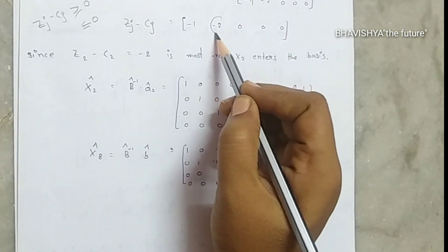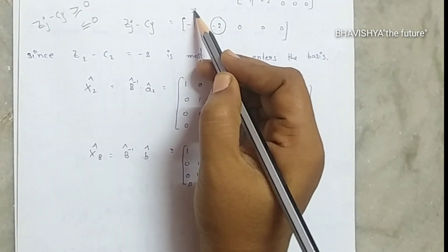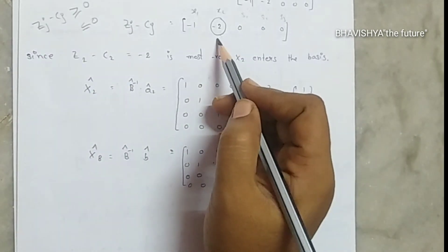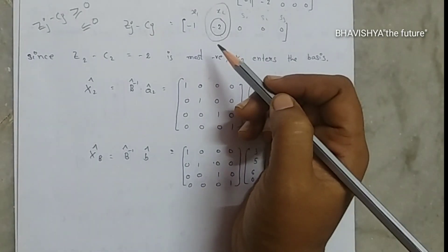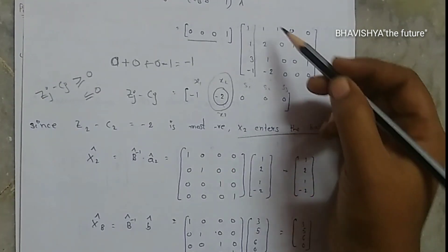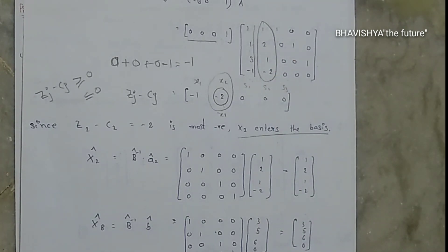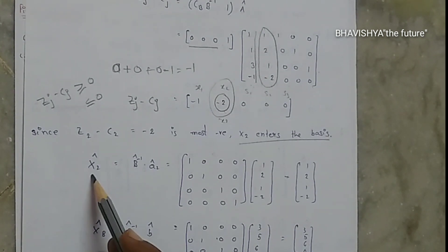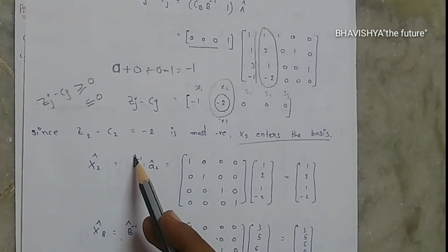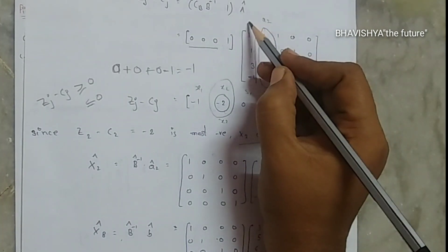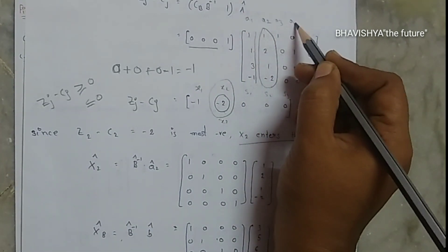The most negative value is -2, corresponding to the x2 column. The variables are x1, x2, s1, s2, s3. Since the most negative ZJ - CJ corresponds to x2, x2 enters the basis. Now let us find the basic values. We compute X2-cap using the formula: X2-cap = B-inverse-cap · A2-cap. Here A2 = [1, 2, 1, -2].